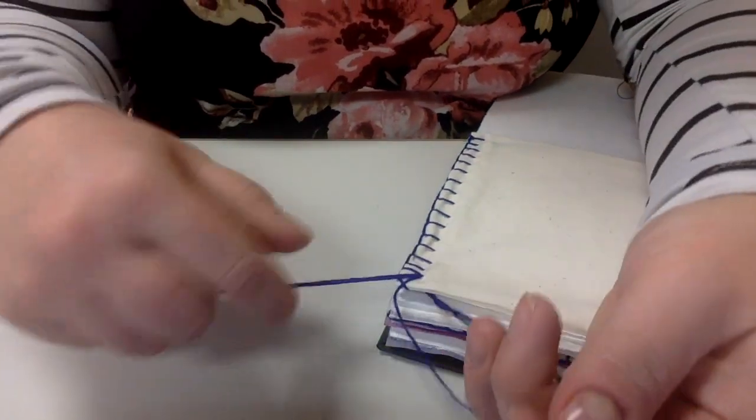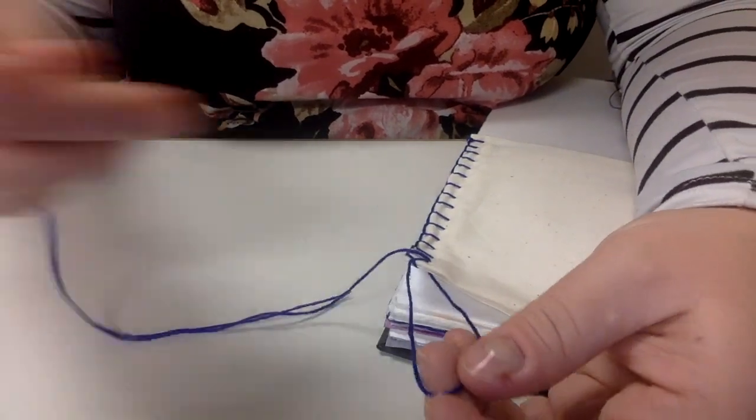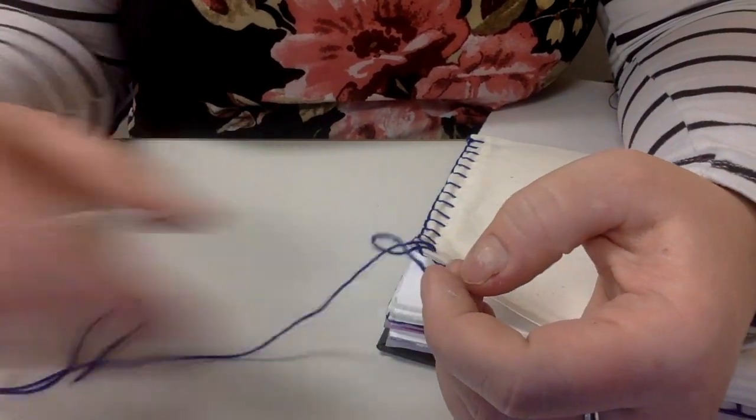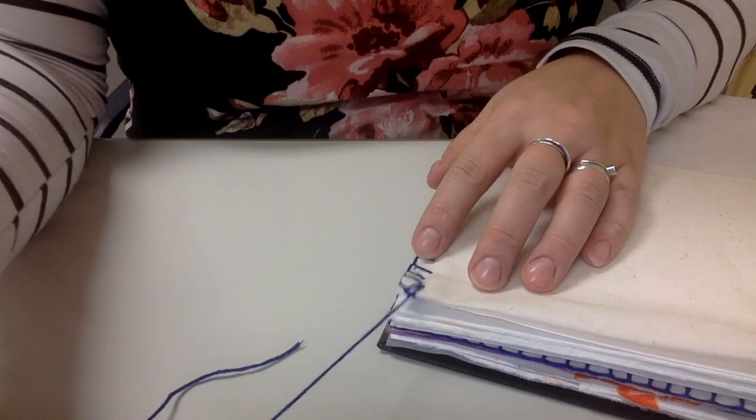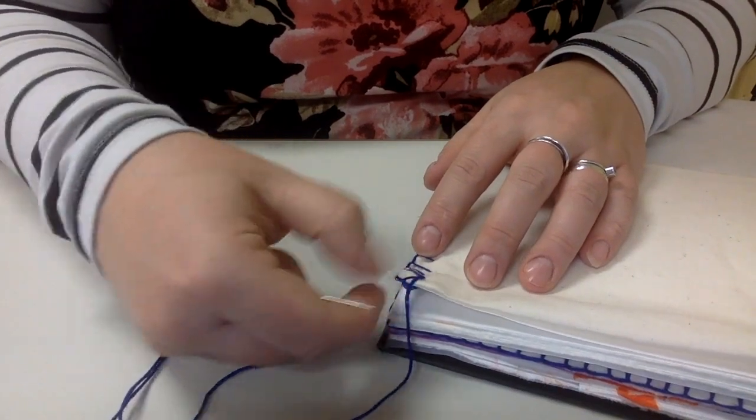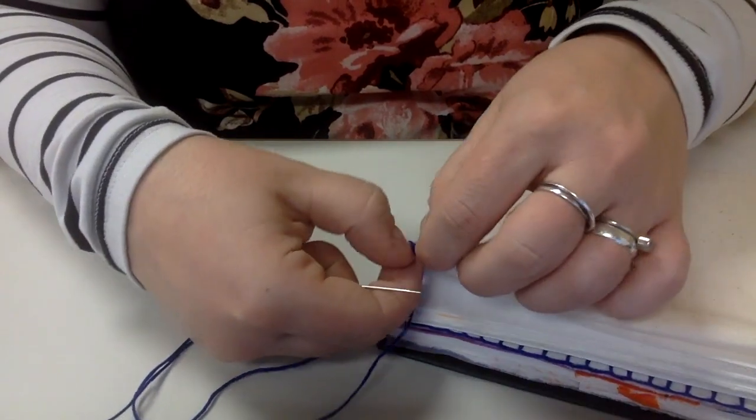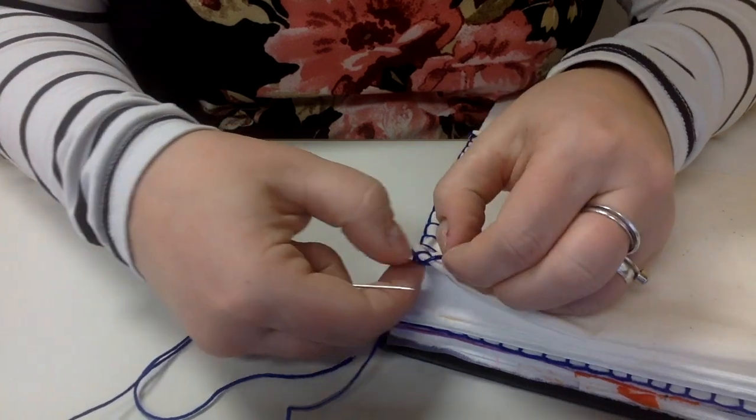This last time we are going to pull it to the side. Again, you don't want to pull this too tight, so you might have to kind of readjust your embroidery floss here a little bit.